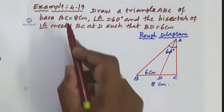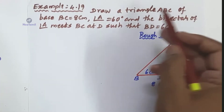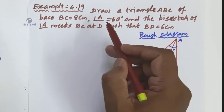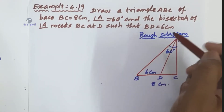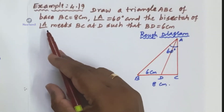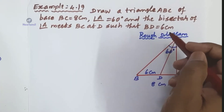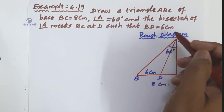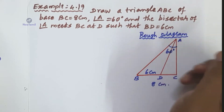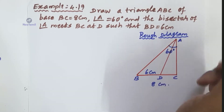Example number 4.19: Draw a triangle ABC where the base BC is equal to 8 cm, angle A is equal to 60 degrees, and the bisector of angle A meets BC at D such that BD is equal to 6 cm.